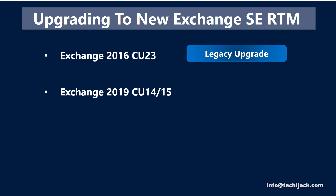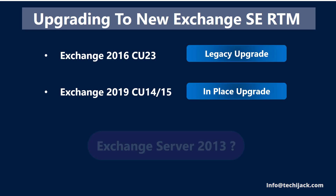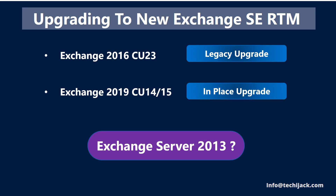The second method is in-place upgrade, a new way of upgrading Exchange Server. It is identical to installing a CU and is supported only for upgrades from Exchange 2019 CU14 or CU15 to Exchange SE. If you are running Exchange 2013, you need to first do a legacy upgrade to Exchange 2019 CU14, then remove Exchange 2013 from your organization, upgrade to Exchange 2019 CU15, and then perform an in-place upgrade to Exchange SE.